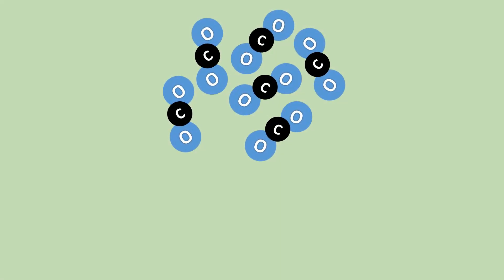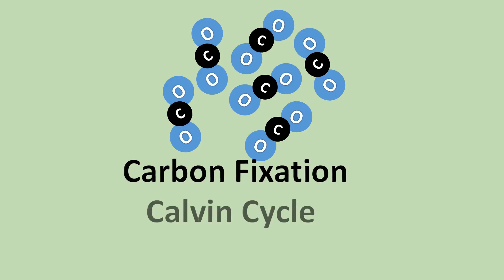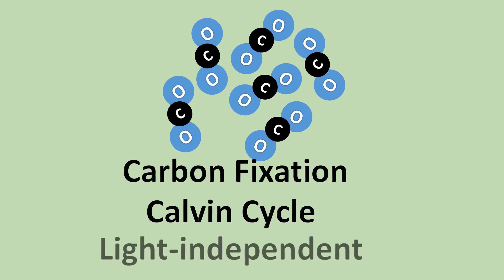The second stage, called the carbon fixation or the Calvin cycle, uses the power of ATP and NADPH made in the light reactions to rearrange carbon dioxide molecules into sugar molecules. These reactions are light-independent, meaning they do not need sunlight to proceed.